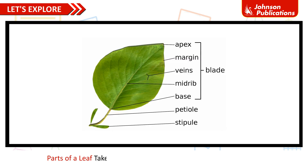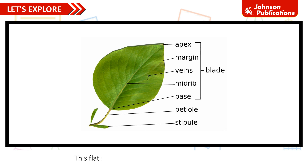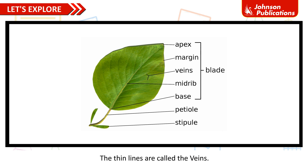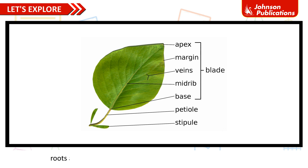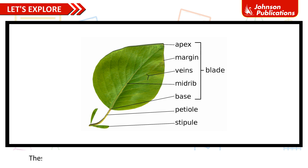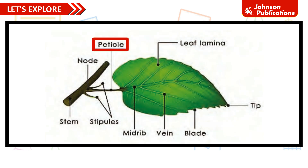Parts of a leaf. Take a leaf and observe it. Leaves have a flat surface. This flat surface is called the leaf blade or lamina. The middle line is called the main vein or the midrib. The thin lines are called the veins. These veins supply water and minerals to the leaf from the roots and carry food from the leaf to the other parts of the plant. We can see fine pores on the bottom of the leaf through a microscope. These pores are called the stomata. Air enters the leaves through the stomata.